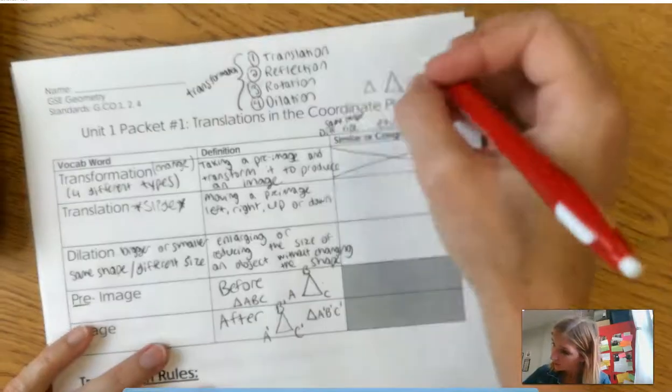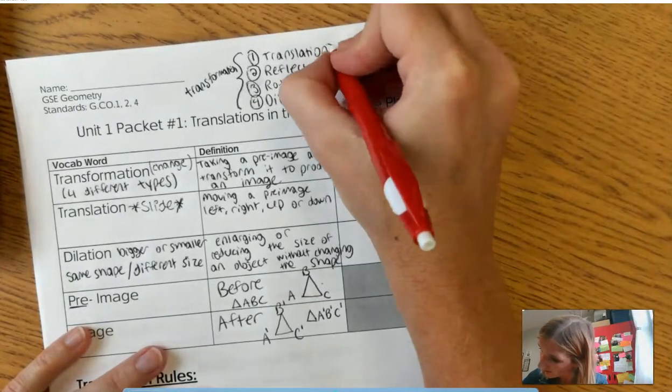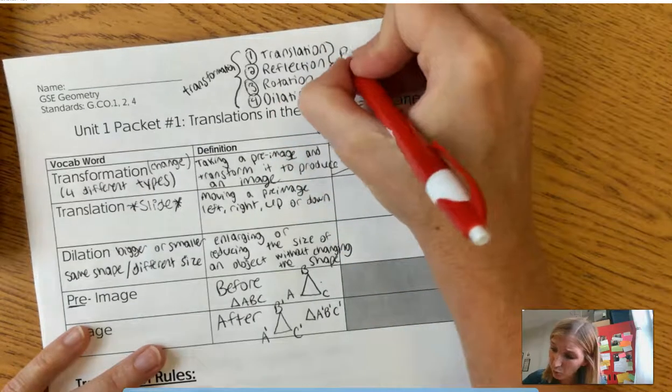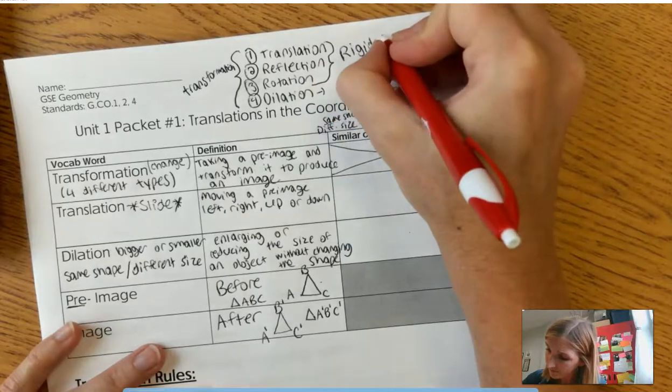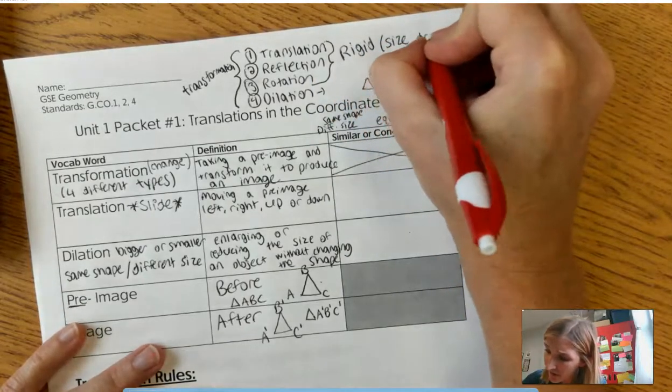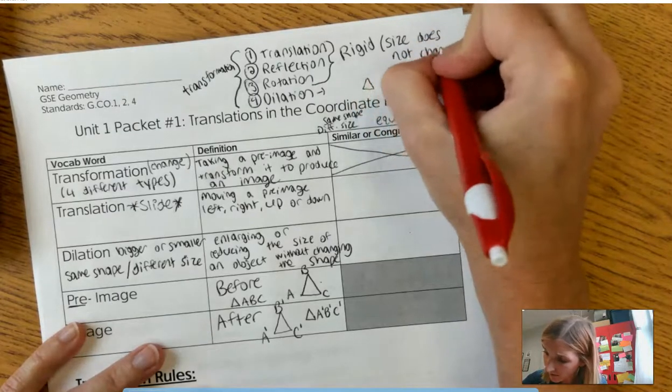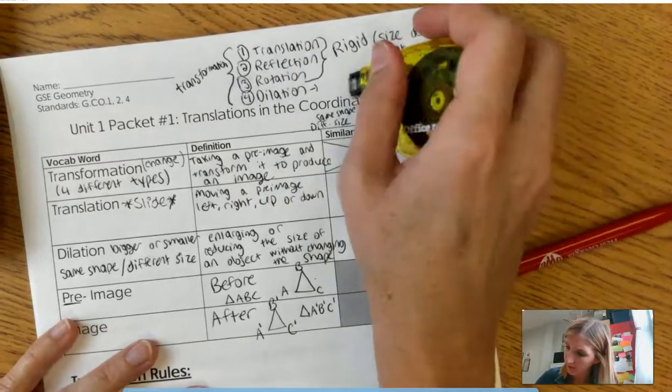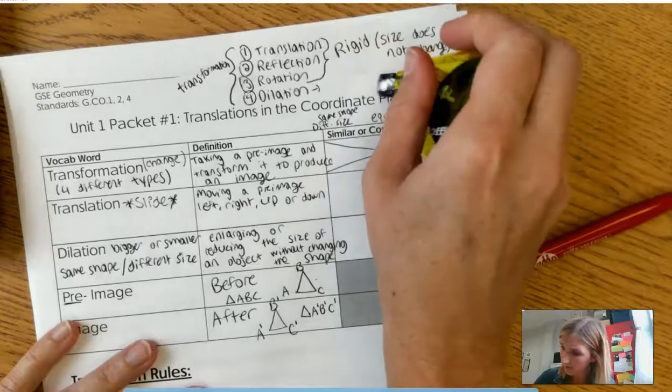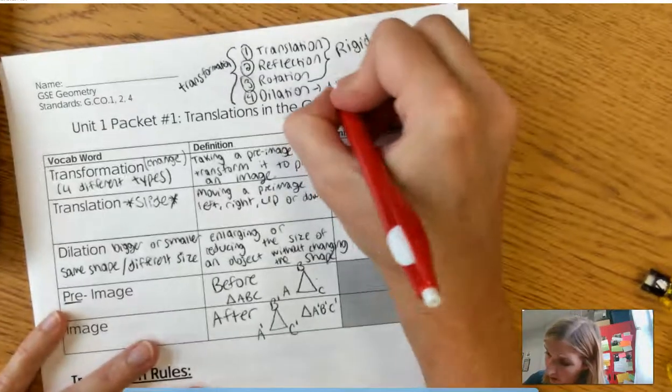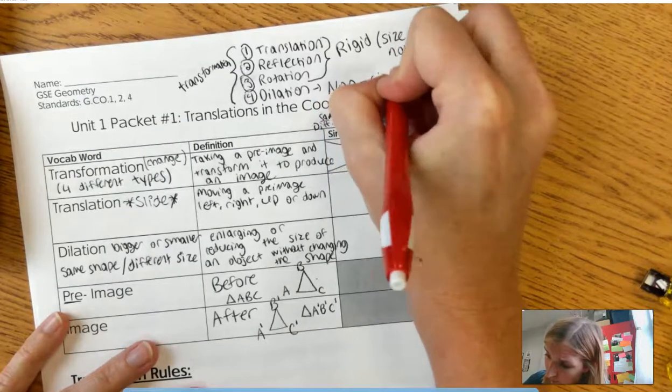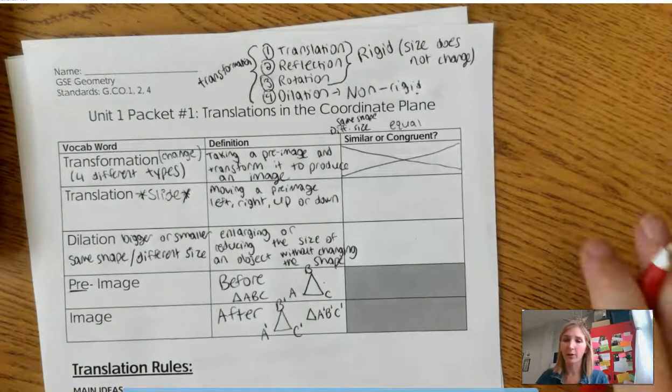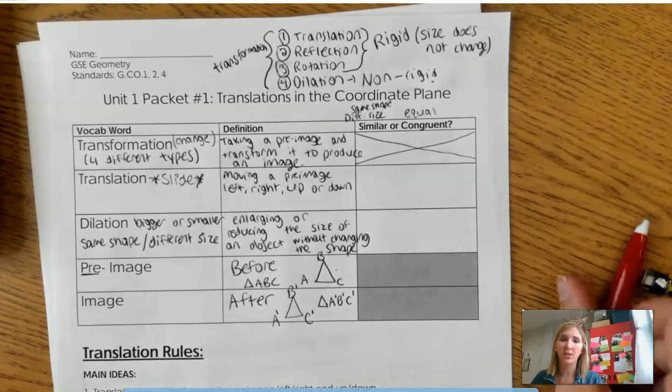So what we do is we call these three transformations rigid because the size does not change. We call dilations—let me get these stupid triangles out of here—non-rigid. That word rigid means stiff, right? You know, like rigid. You can't—I don't know why I'm doing this, you can't even see me. Alright. So rigid means stiff, right? Not changing.